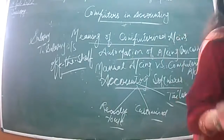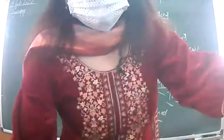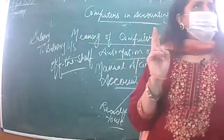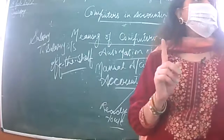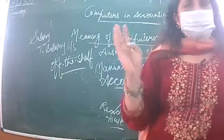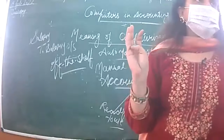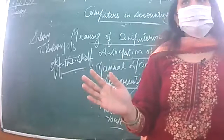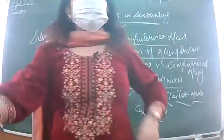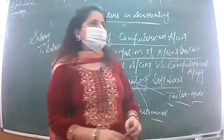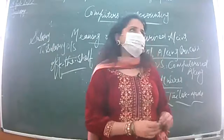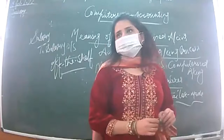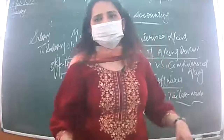We will continue tomorrow — a little bit is left, just one paragraph, and tomorrow our syllabus will be finished. Also note: subsidiary books and depreciation are not part of your second term. The chapters for the second term are: BRS, provision and reserves, trial balance, bills of exchange, rectification of errors, final accounts, and computers in accounting. That's it.